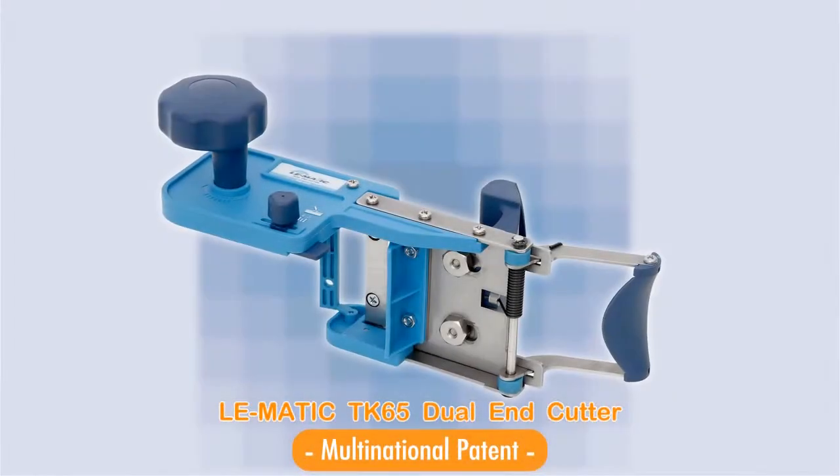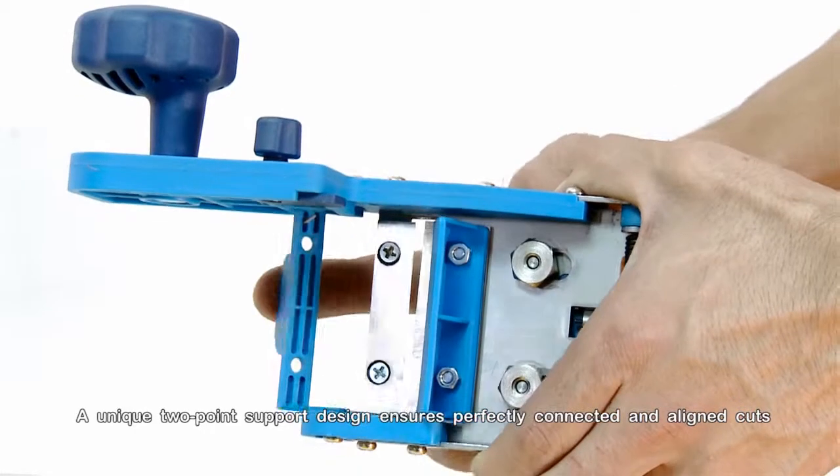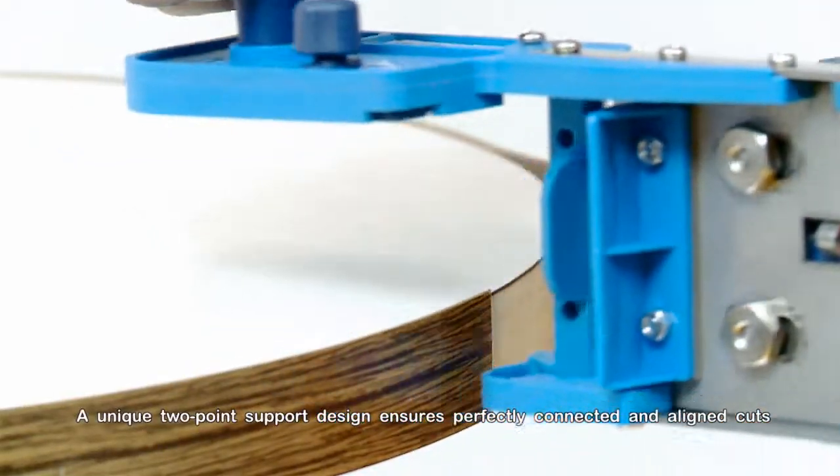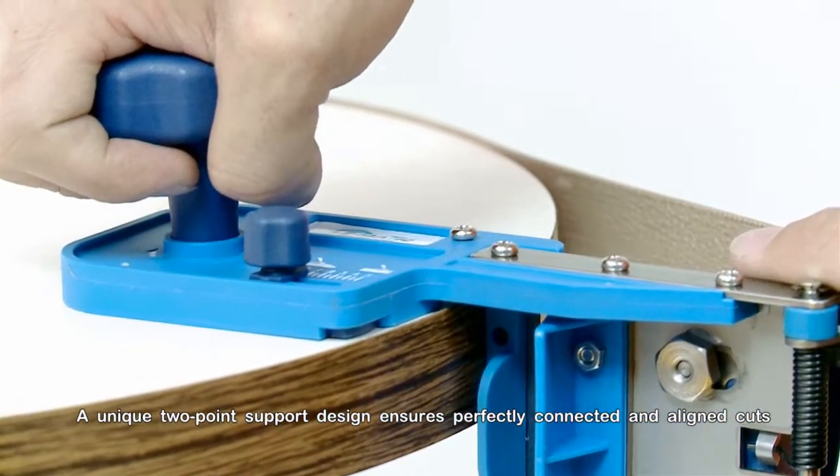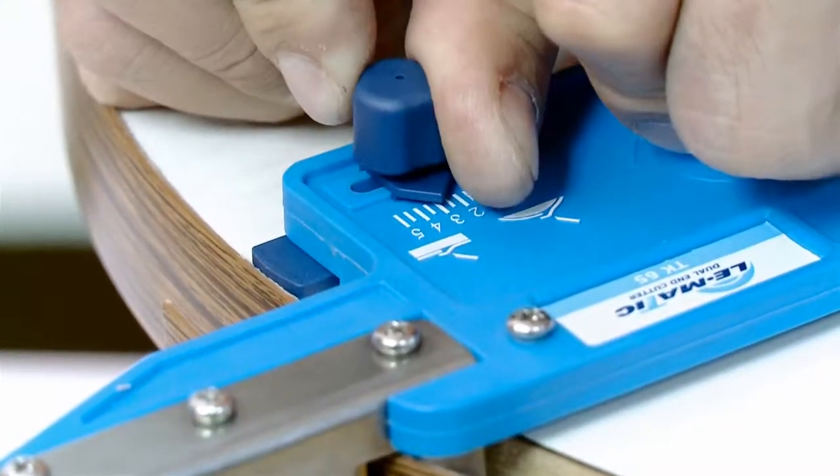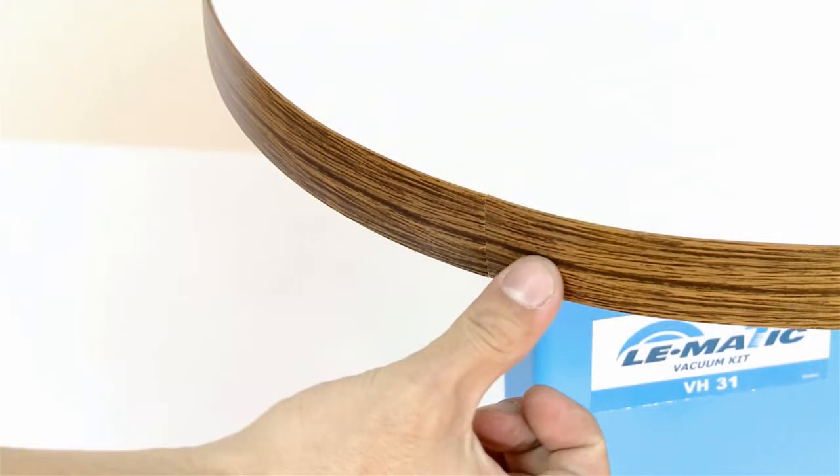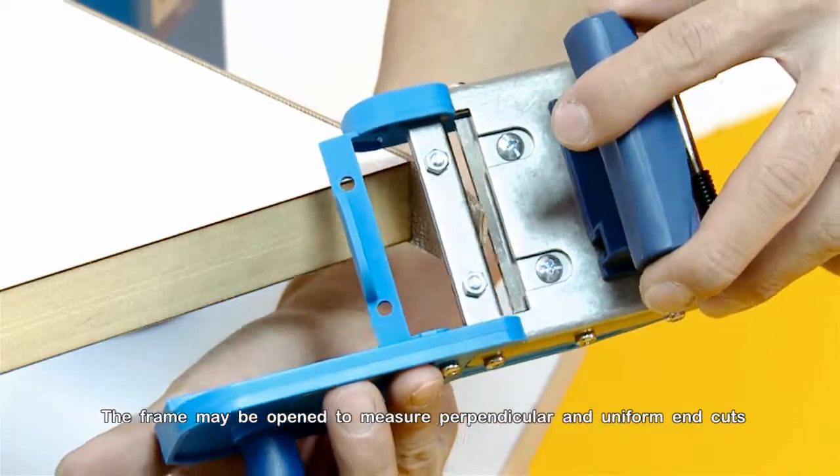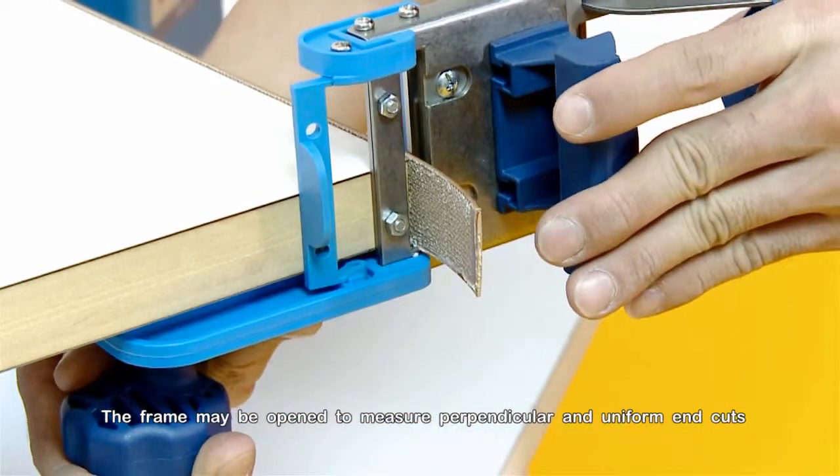The Lomatic TK65 Dual End Cutter. A unique two-point support design ensures perfectly connected and aligned cuts. The frame may be opened to measure perpendicular and uniform end cuts.